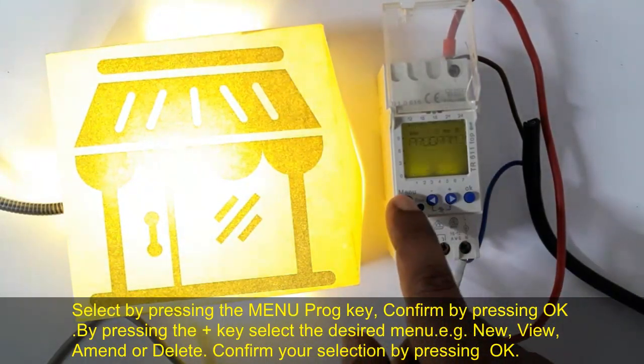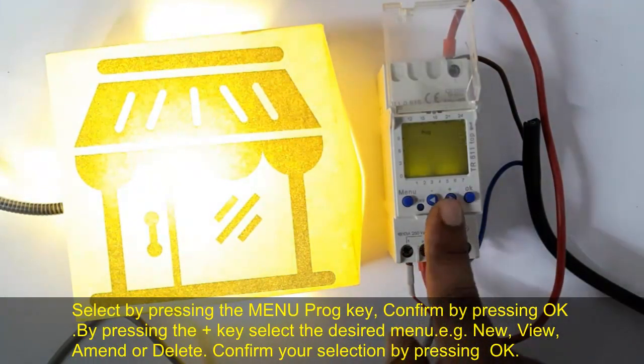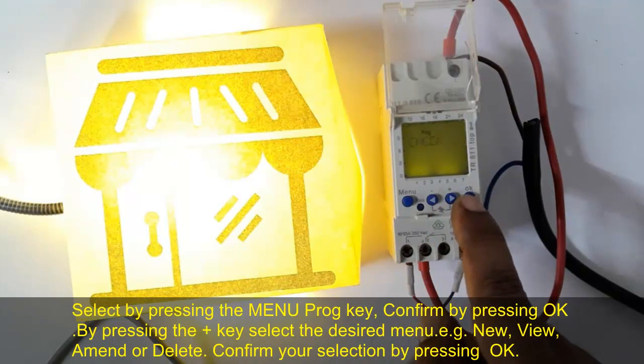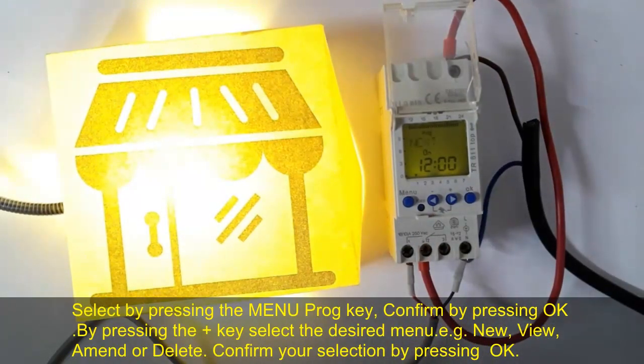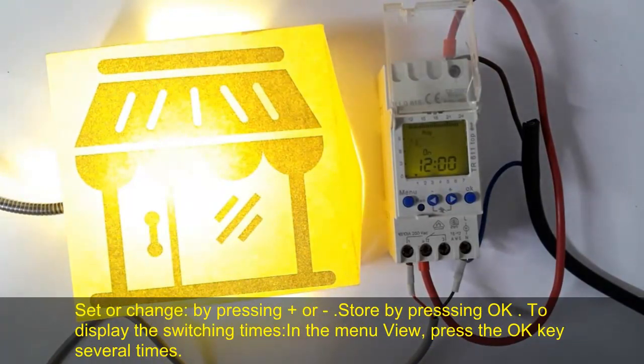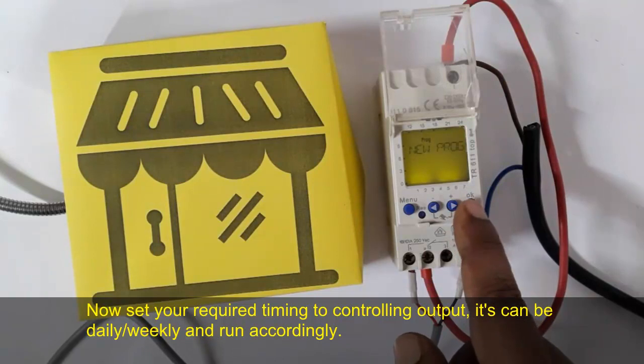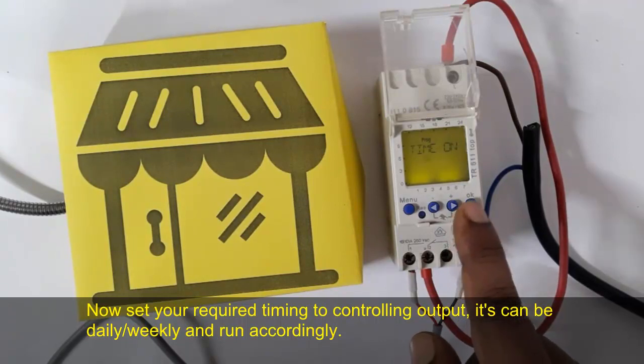We are using menu, plus, minus, and OK button for programming. If you want to clear the program, you can clear all programs here. Or if you want to set a program, you can set it here. There are 42 programs available for setting. Now we will do the programming.